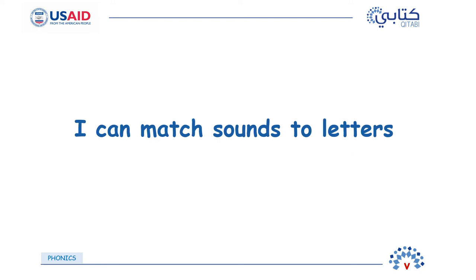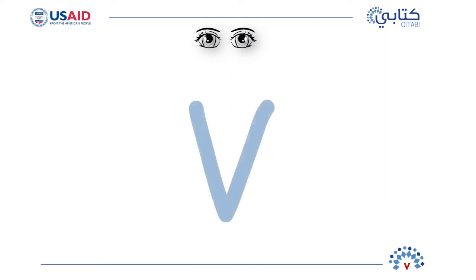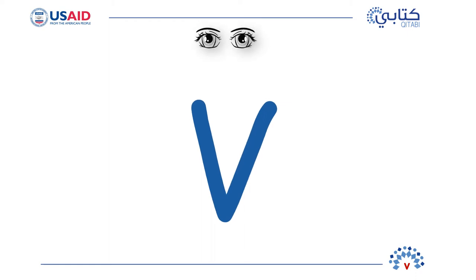Remember that V makes the sound V. Look at the letter V. Use your index and middle fingers to show the letter V. Remember how it looks. Can you close your eyes and see the small letter V in your head? Great! Now open your eyes and let us see the letter V. This is a small letter V. Every letter has a small letter and a big letter. Now look at the big letter V — we call it the capital V. It looks exactly like the small V, only bigger. Can you close your eyes and see the big letter V in your head? Great!